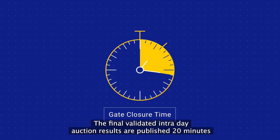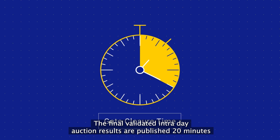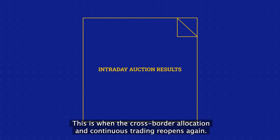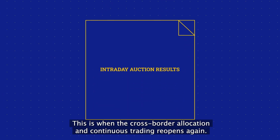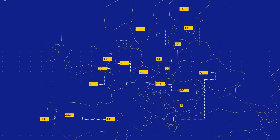The final validated intraday auction results are published 20 minutes after the gate closure time. This is when the cross-border allocation and continuous trading reopens again.